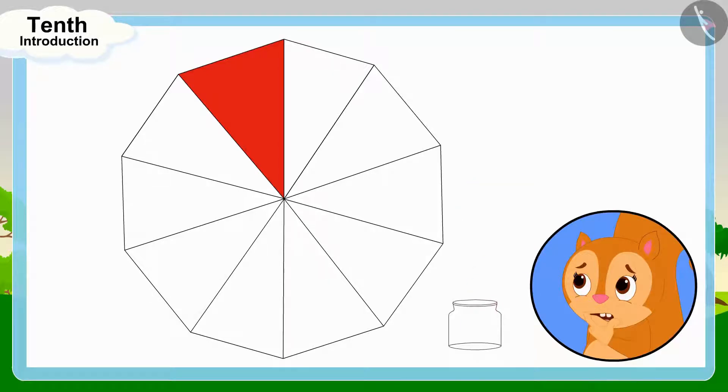This flower is made up of 10 similar triangles and Chanda has colored one of these triangles. This means Chanda has filled red color in one tenth part of the flower.